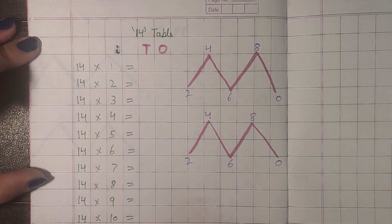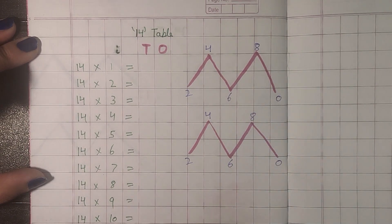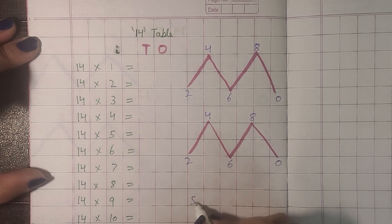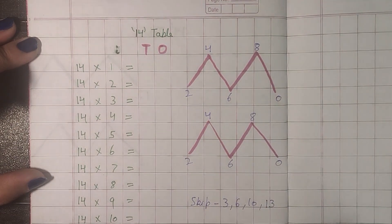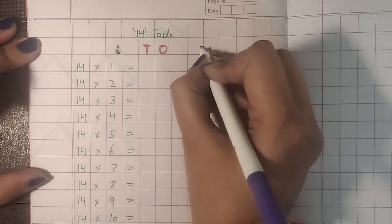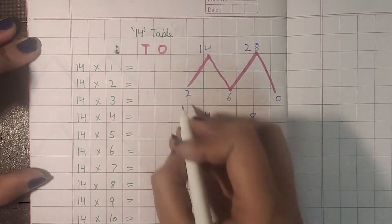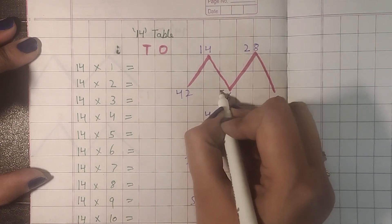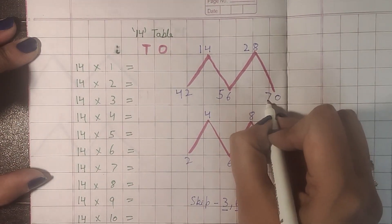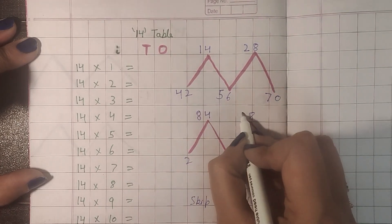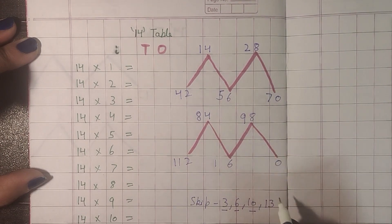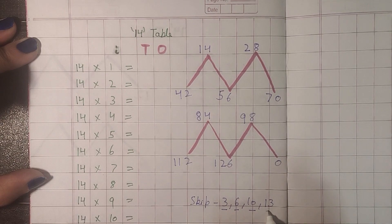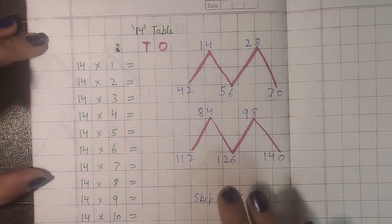For the tens place, we write the numbers from 1 to 14 but skip the numbers 3, 6, 10, and 13. So we write: 1, 2, skip 3, 4, 5, skip 6, 7, 8, 9, skip 10, 11, 12, skip 13, and 14. And here is our 14 times table ready.